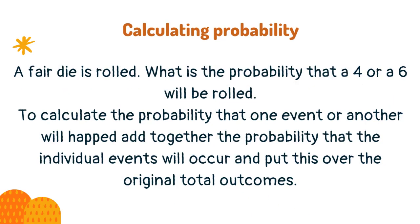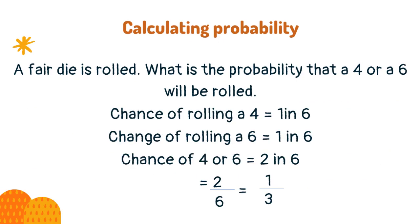A fair die is rolled. What is the probability that a 4 or a 6 will be rolled? To calculate the probability that one event or another will occur, add together the probabilities of the individual events and put this over the original total outcomes. When calculating probabilities it is important to simplify your answers whenever possible.